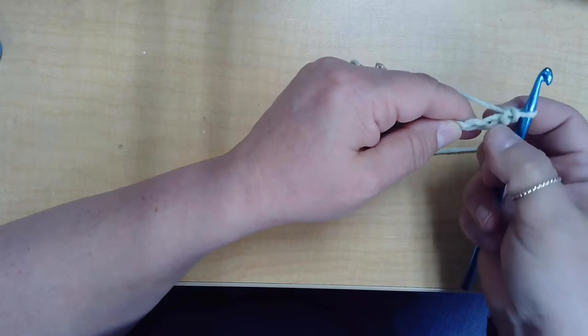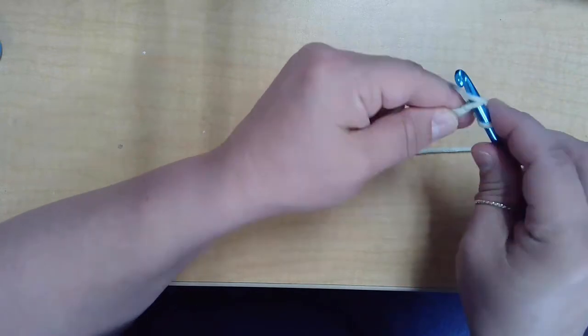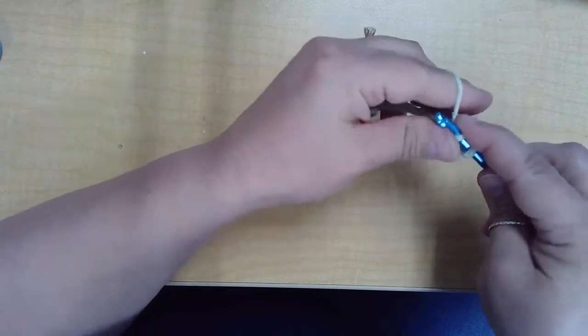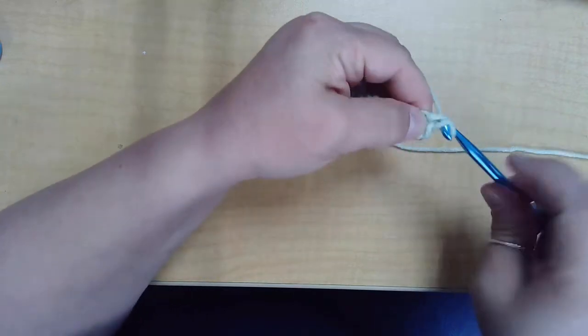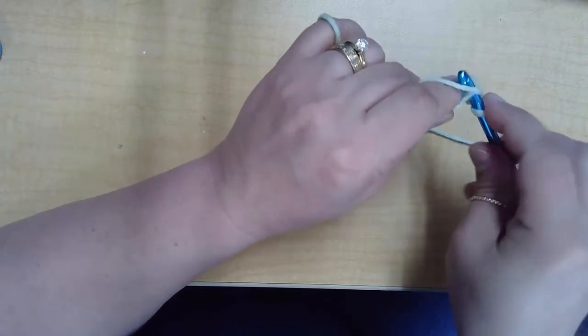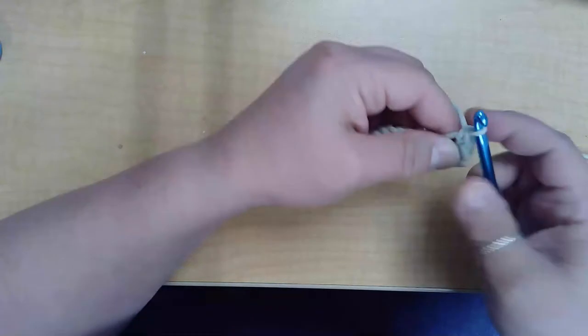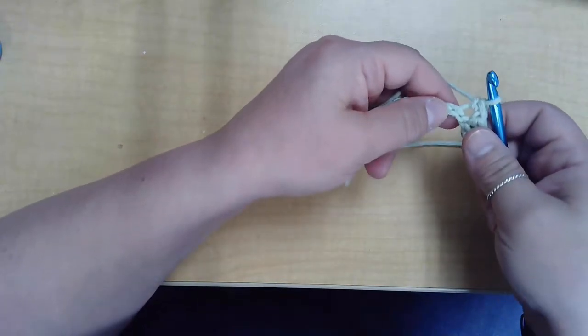So now we're going to move to the next chain space, not working into the same space, working to the next one down, yarn over, pull through, yarn over, and pull through both two loops. And this gives us height as well as movement along the chain.